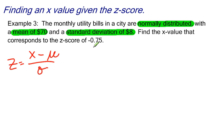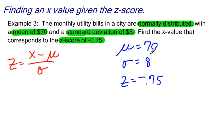Find the x-value that corresponds to a z-score of negative 0.75. So if you look at this, I know everything in this formula except for x. I know that mu, the mean, is equal to 70. I know that sigma, the standard deviation, is equal to 8. And I know that the z-score that I'm concerned with is negative 0.75.